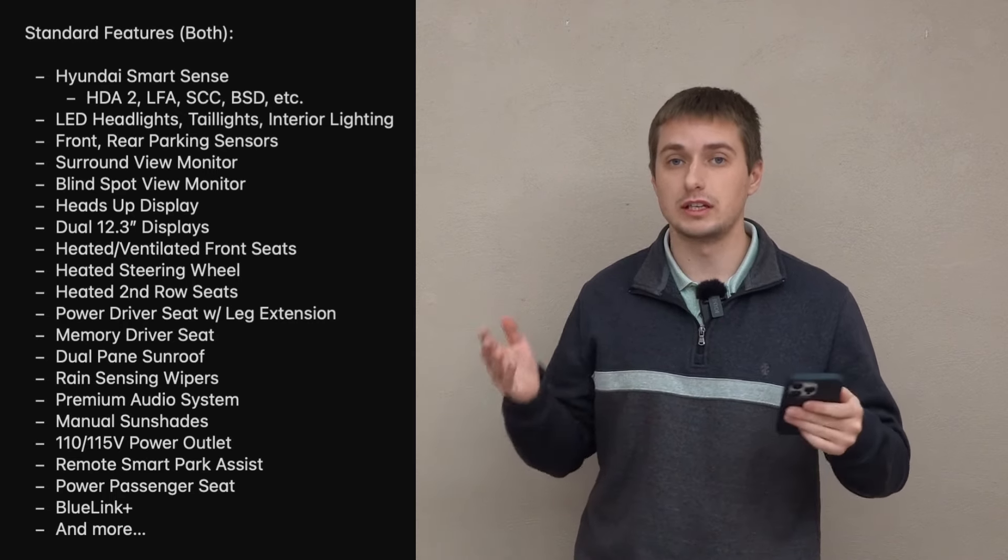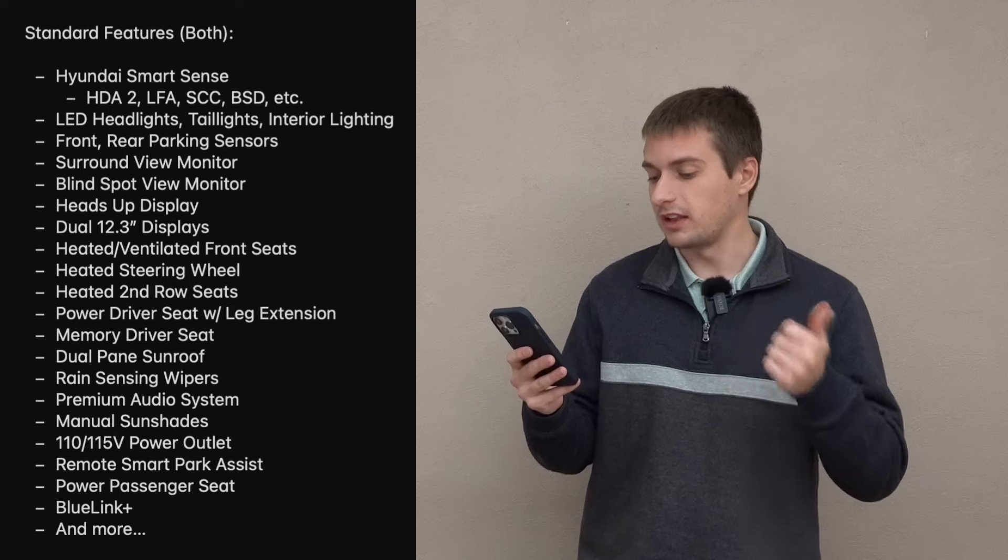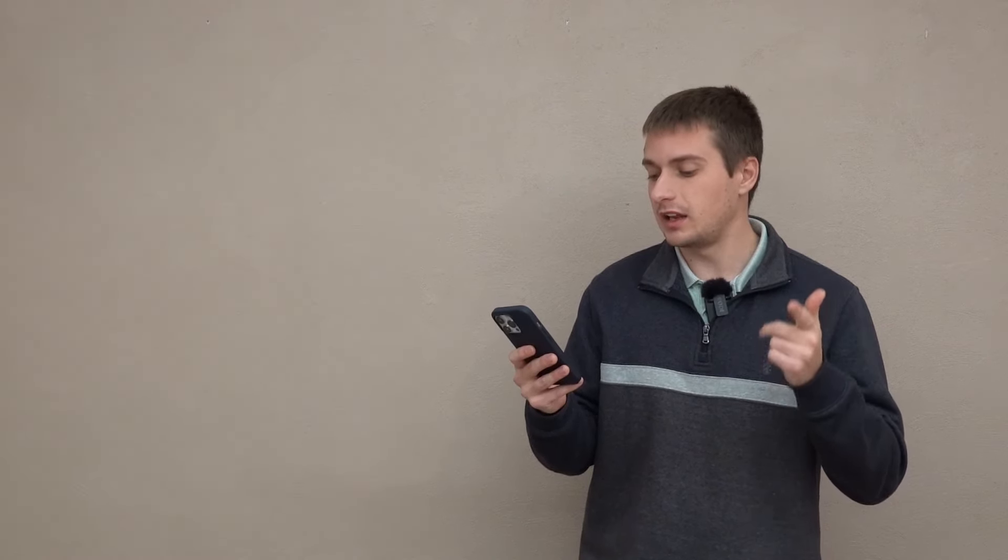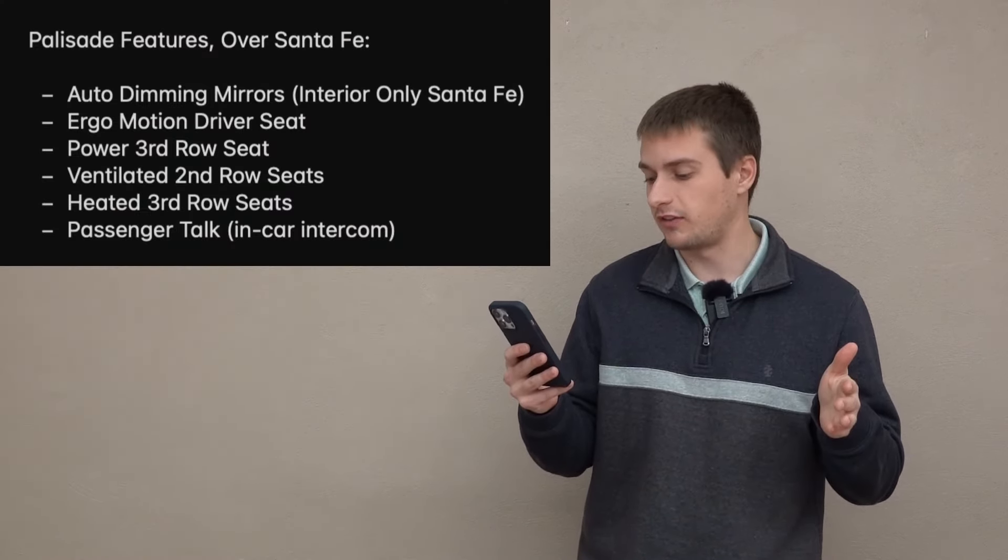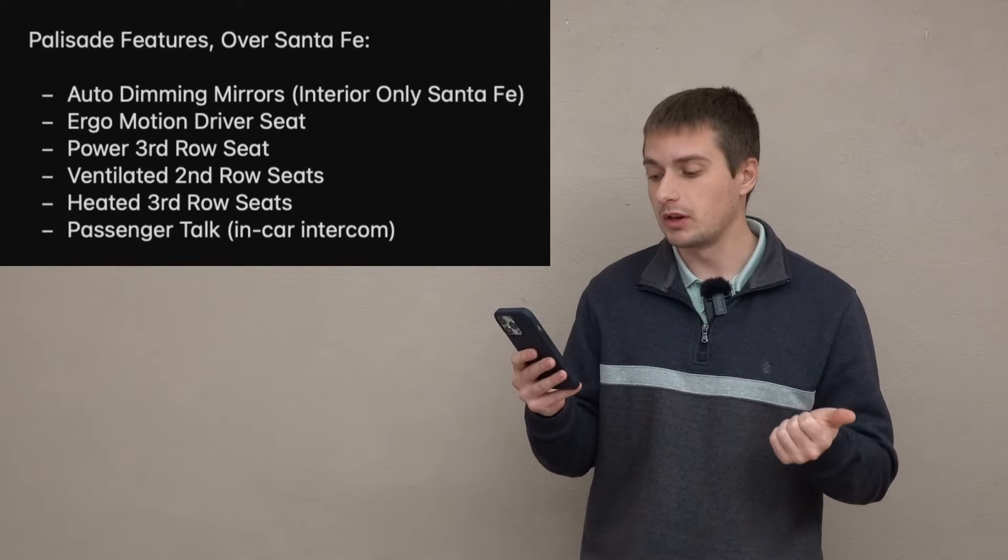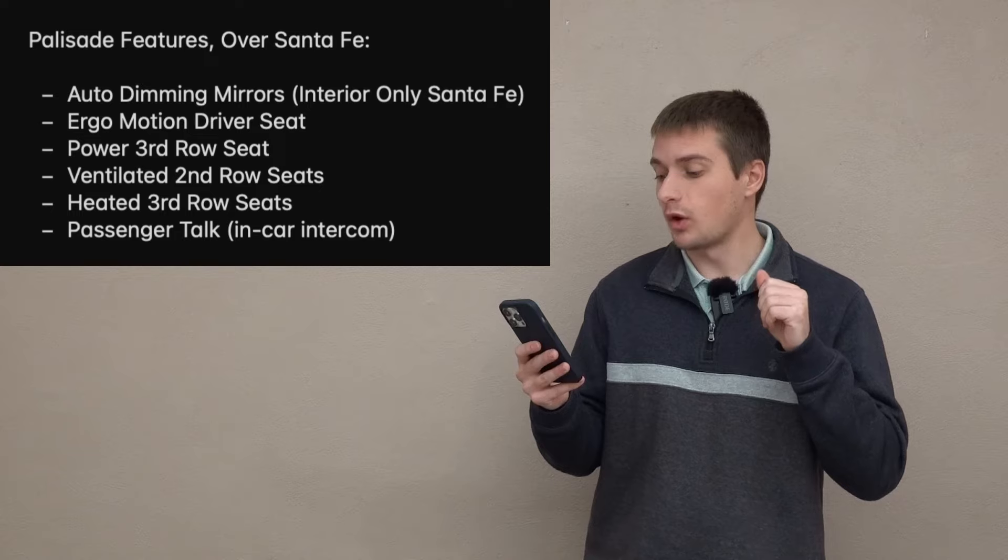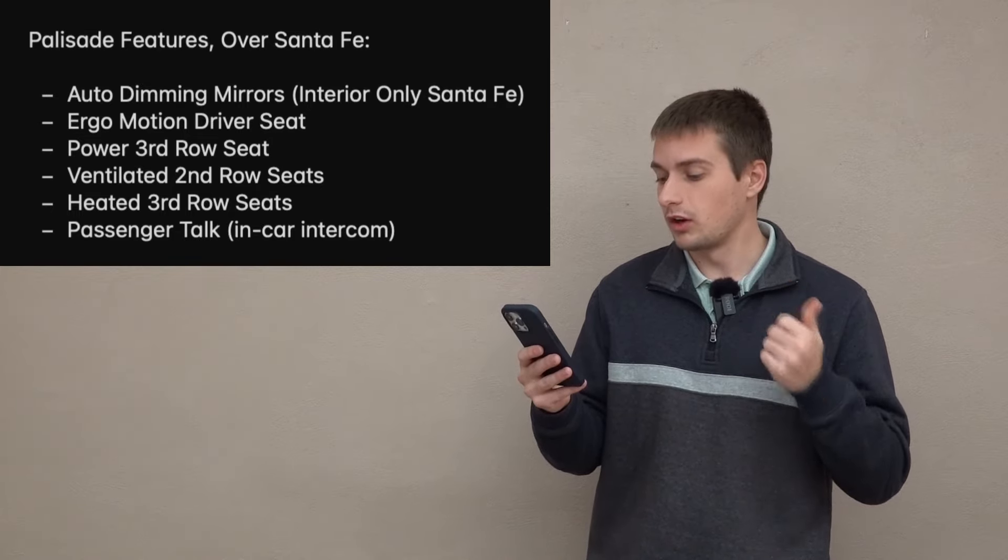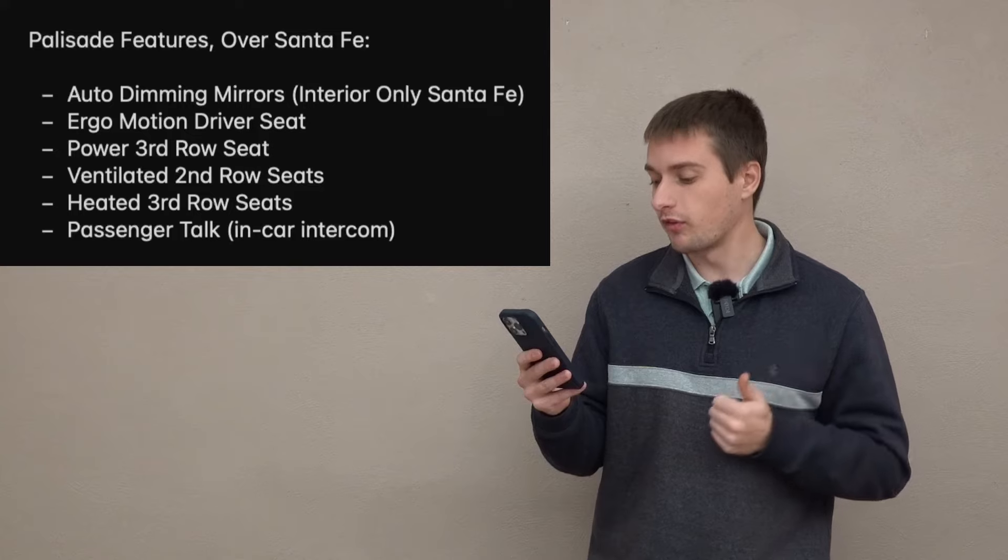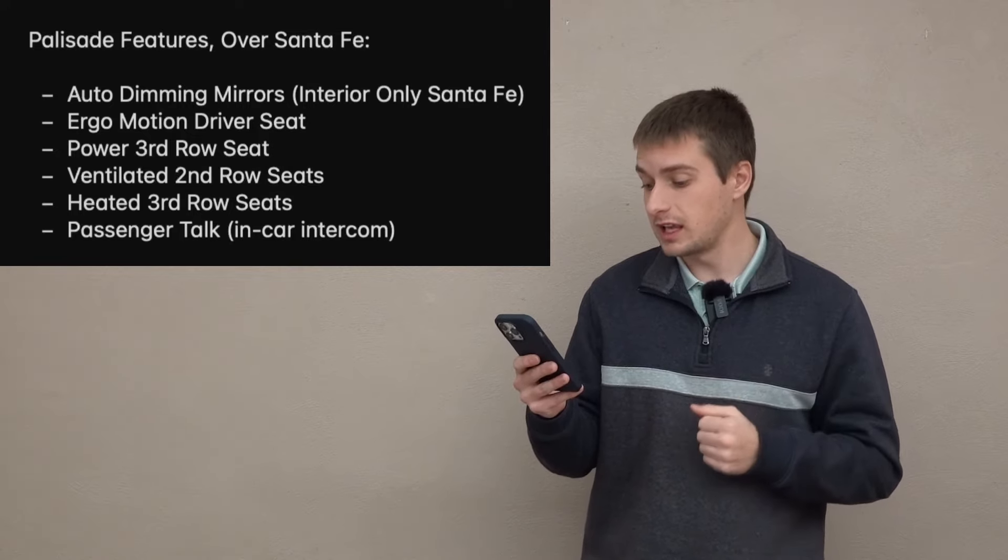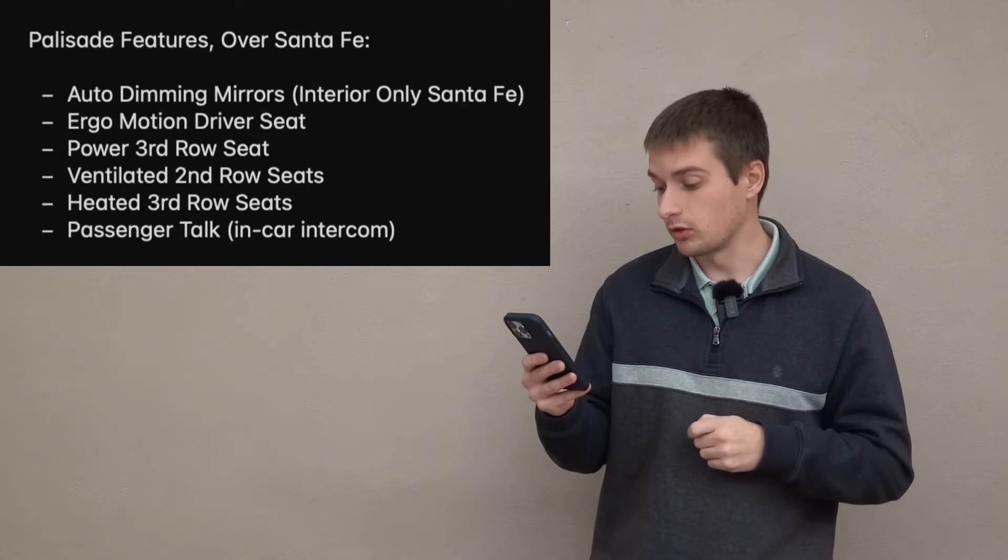Power driver seat with leg extension, memory driver seat, dual pane power sunroof, rain sensing wipers, premium audio system, manual second row sunshades, the 110 or 115 volt power outlet, remote smart parking assist, power passenger seat, BlueLink, and the list goes on. So all these are going to be standard across the board on each of these two vehicles.